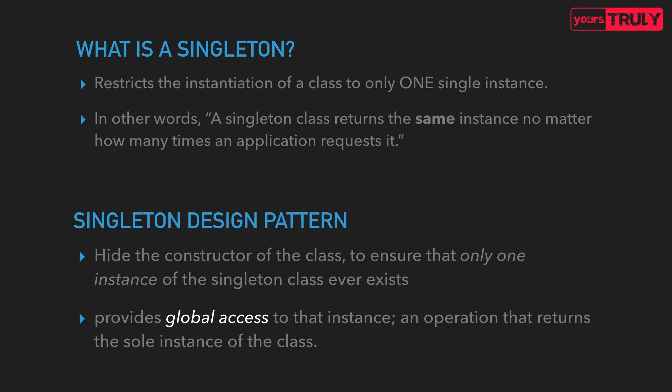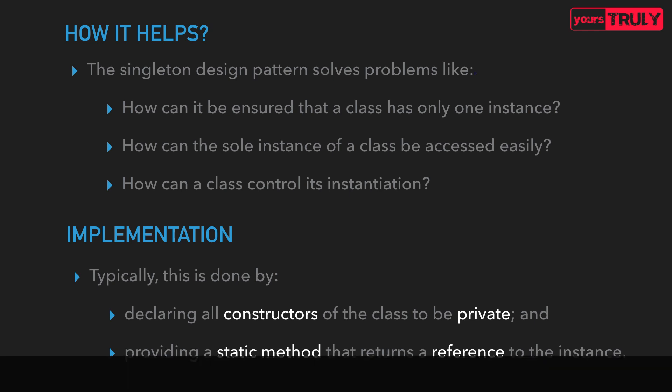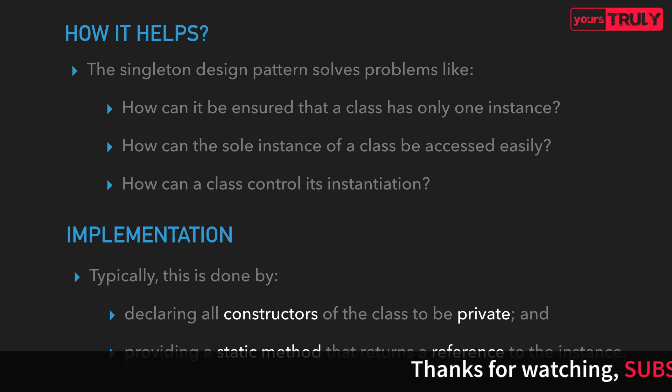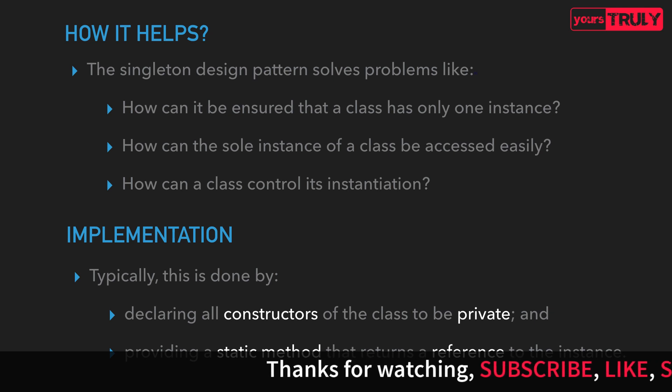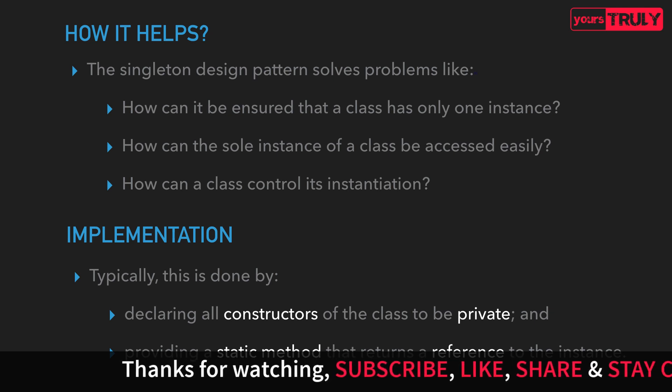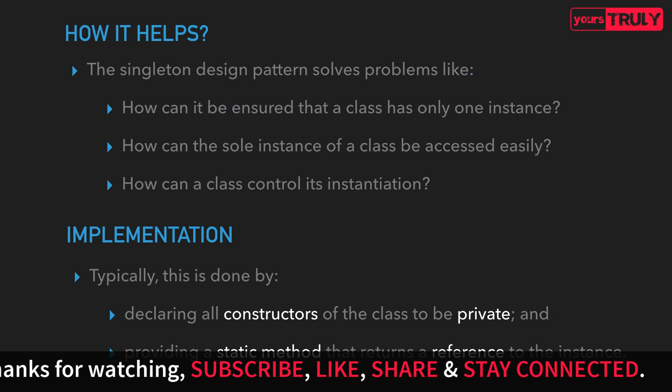Now let's look at the design pattern of a singleton. We need to hide the constructor of the class so that the application cannot initialize that class directly. Secondly, we provide global access to the instance created by the class itself. This pattern solves problems such that the class will have only one instance, it is easily accessible by any part of the application, and the class can control its own instantiation.